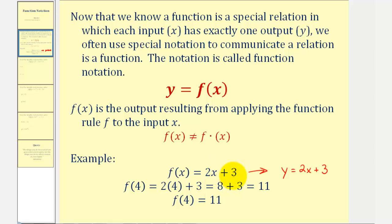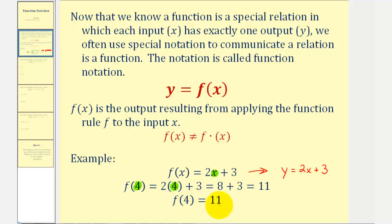To find a function value, for example let's say f of four, we substitute four for x. So f of four is equal to two times four, instead of two times x, and then plus three. Well two times four is eight, so this is equal to eight plus three, which is equal to 11. So we say f of four equals 11.